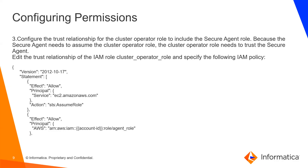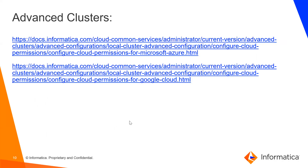Configure the trust relationship for the cluster-operator-role to include the secure agent role, because the secure agent needs to assume the cluster-operator-role and the cluster-operator-role needs to trust the secure agent. Edit the trust relationship of the IAM cluster-operator-role and specify the provided policy. For Microsoft Azure-based VMs or Google Cloud VMs for the secure agent, you can refer to the documentation links provided.